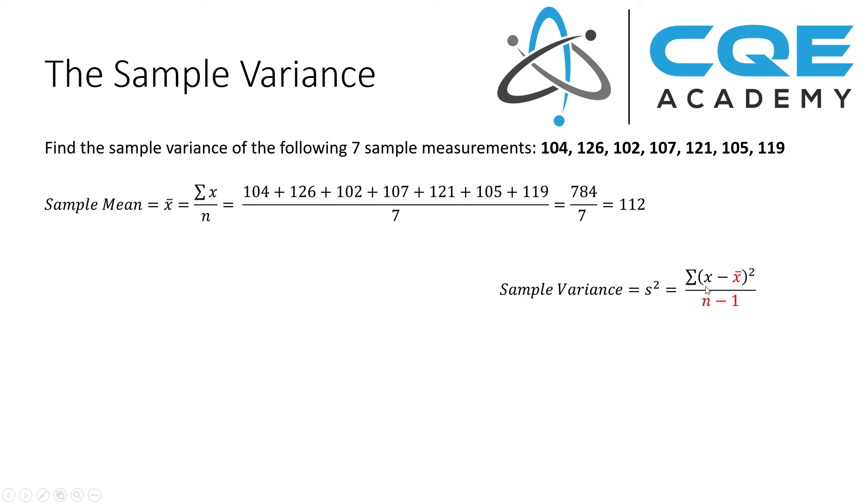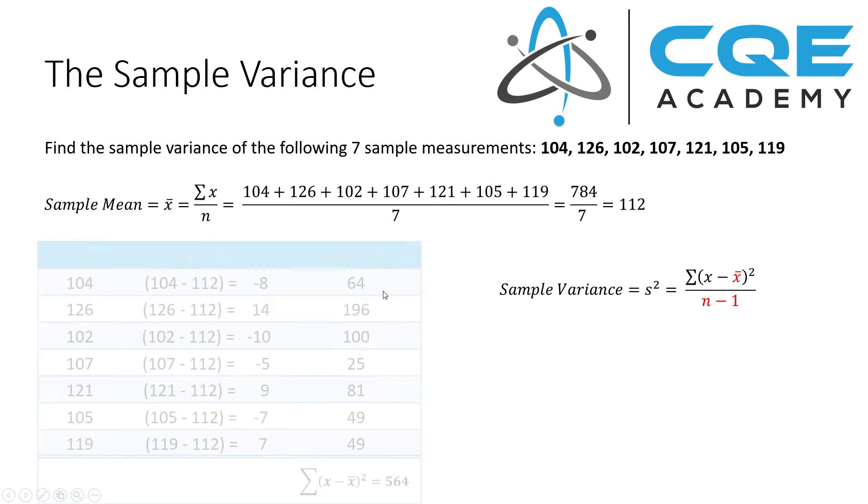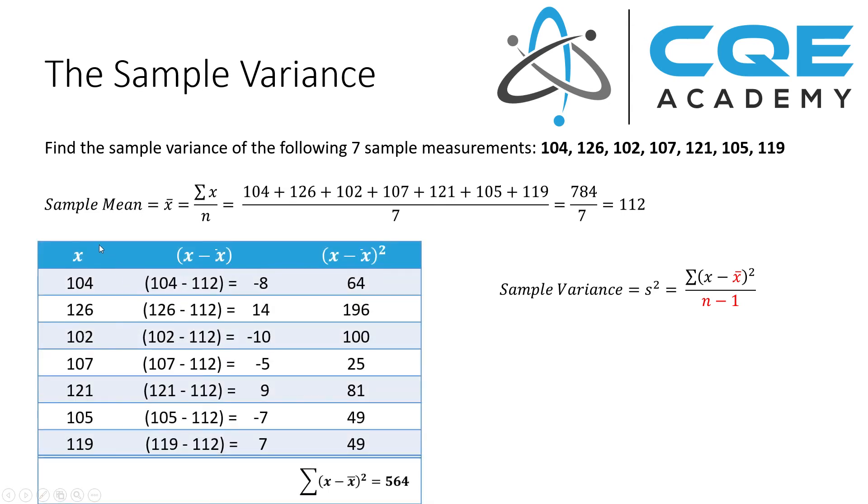Now what we need to do is compare each of our individual values against the sample mean. The best way to do this is to use a table. In this table, we start on the left-hand side with our individual measurements. Then we move over to the next column where we compare our individual measurements against the sample mean.